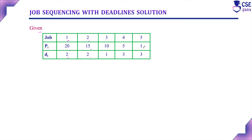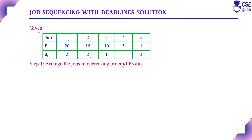The first step is to arrange the jobs in decreasing order of profit. Since our aim is to earn maximum profit, consider the job which earns the maximum profit first and give first preference to that job. Likewise, arrange all jobs in decreasing order of profit. Here, the jobs are already arranged in decreasing order of profit, so we consider the given subset directly.